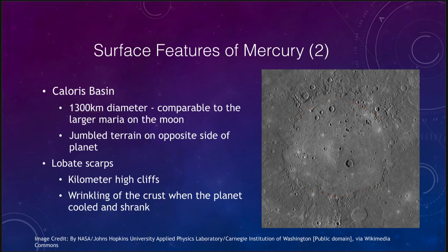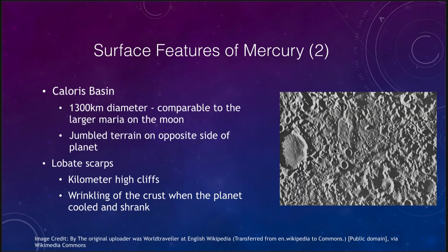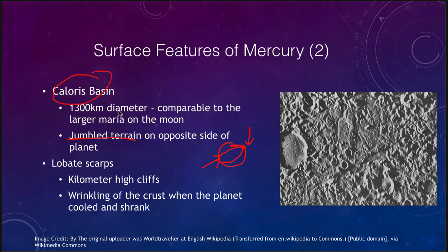Looking at the part of the planet's surface opposite to the Caloris Basin, we find a very jumbled-up terrain. If a very large impact occurs, seismic waves travel through the planet and reach the other side, coming together and jumbling up the terrain there. So if the Caloris Basin is on one side, the jumbled terrain is on the directly opposite side — caused by all those seismic waves focusing their way through the planet.